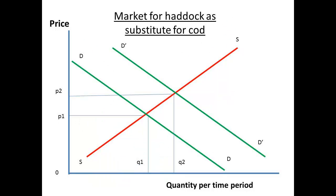What happens to the price of a substitute good? If there is less cod around, there will be more demand for haddock. So the demand curve for haddock shifts from DD to D1D1.